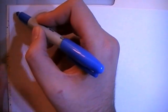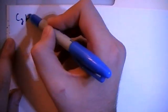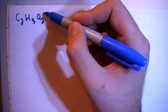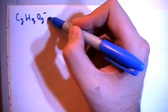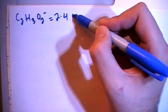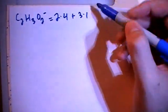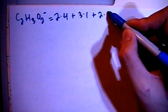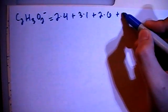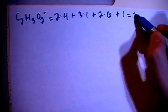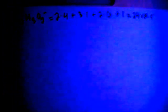The acetate ion is C2H3O2-, so a negative one charge. And that's going to give us two carbons, each with four valence electrons, plus three hydrogens, each with one valence electron, plus two oxygens, each with six valence electrons, plus one more for the negative one charge, for a total of 24 valence electrons. That's a long one.